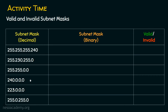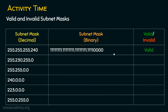In the activity, we are given subnet masks in decimal and must determine if they are valid or invalid. The first example is 255.255.255.240. Converting to binary shows continuous ones followed by zeros — no mixture — so this is a valid subnet mask. Counting the ones: 8 + 8 + 8 + 4 = 28, making it a /28 subnet mask.